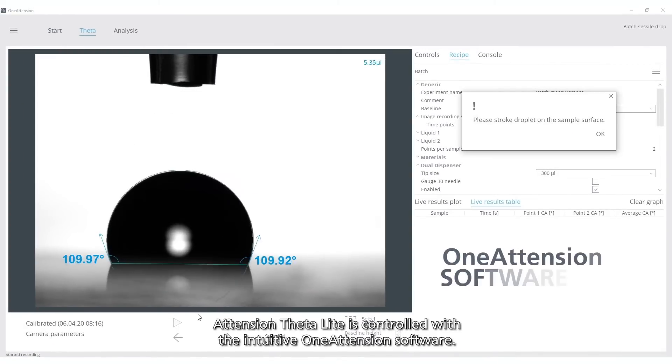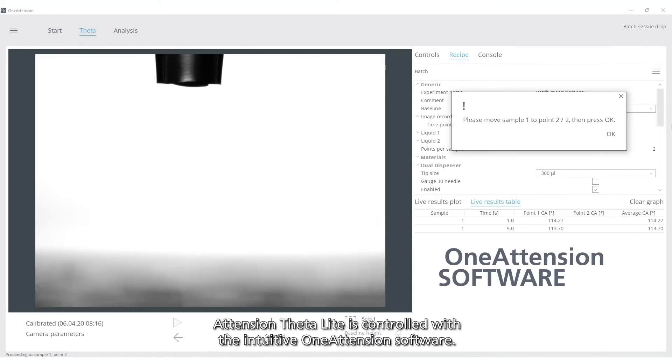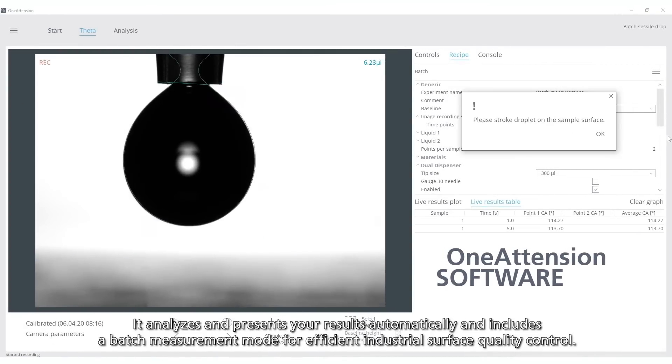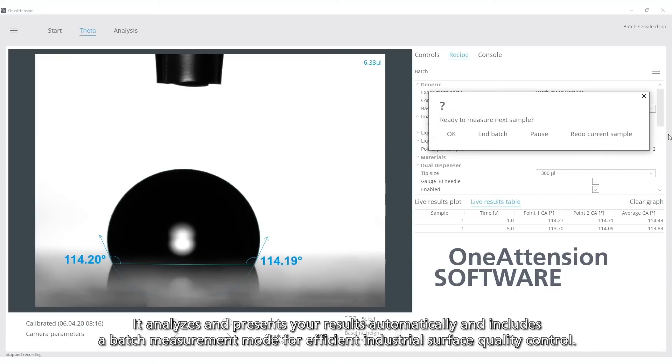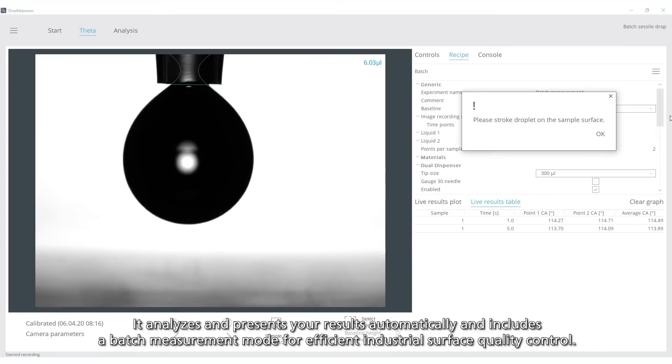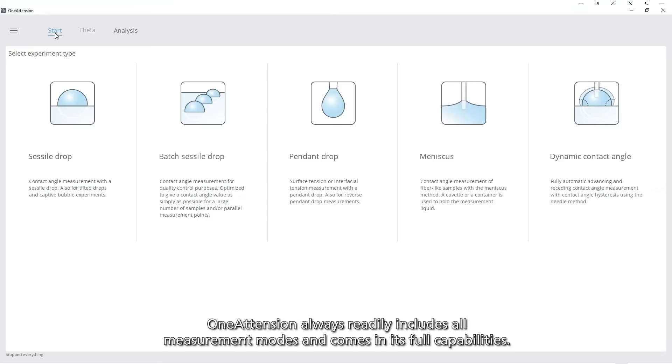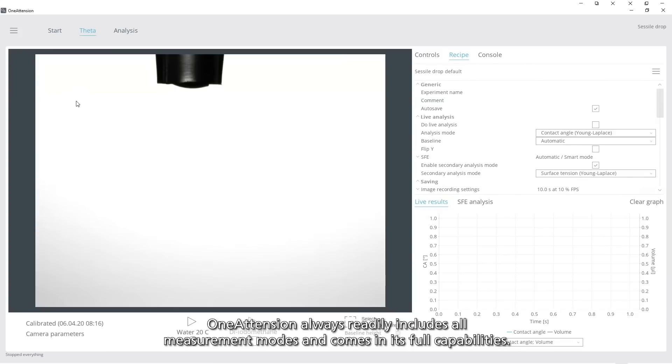Attention ThetaLite is controlled with the intuitive OneAttention software. It analyzes and presents your results automatically and includes a batch measurement mode for efficient industrial surface quality control. OneAttention always includes all measurement modes and comes in its full capabilities.